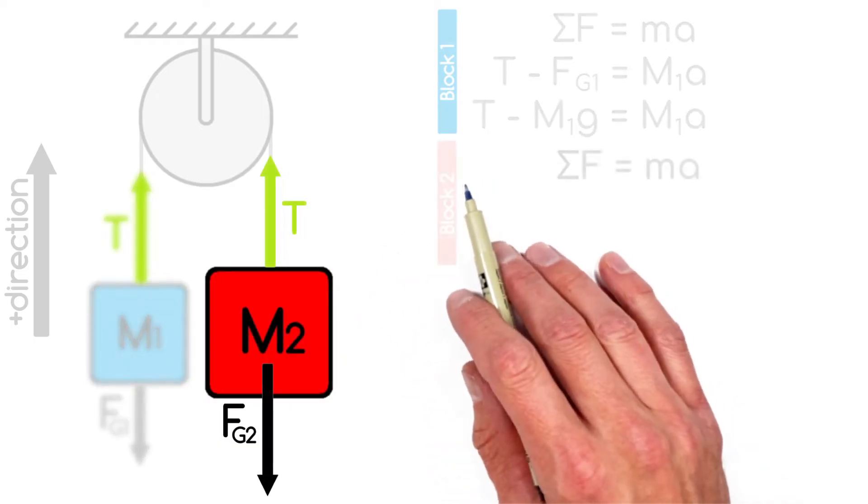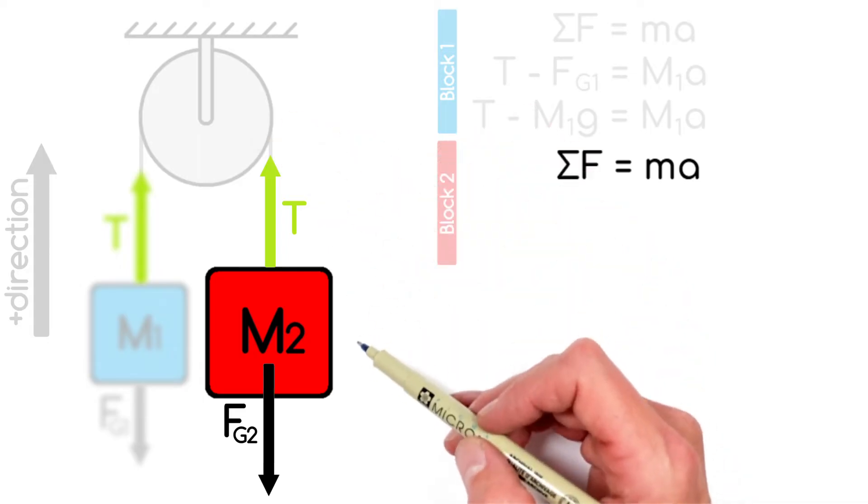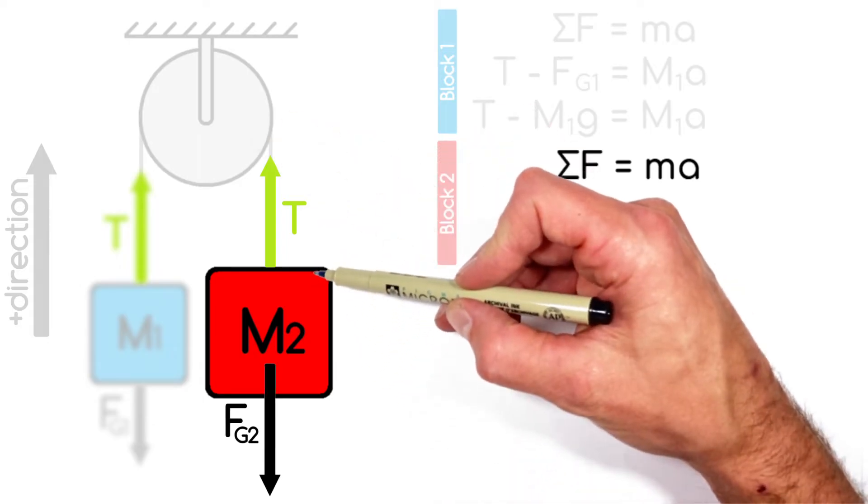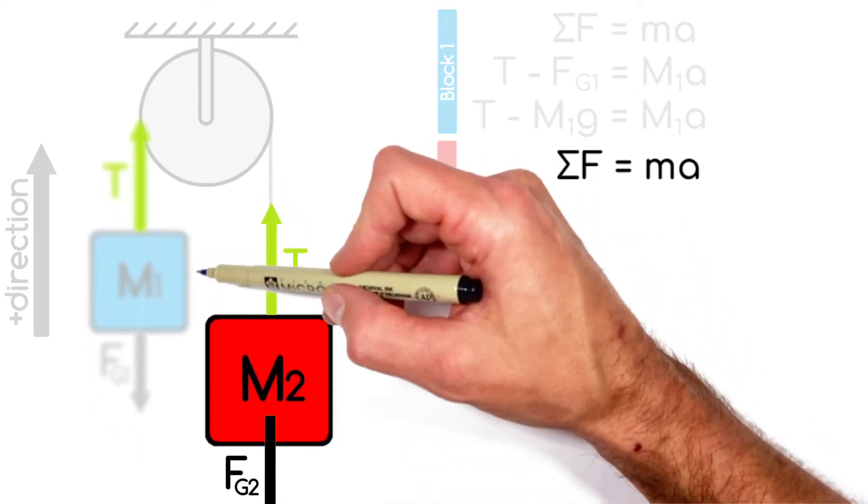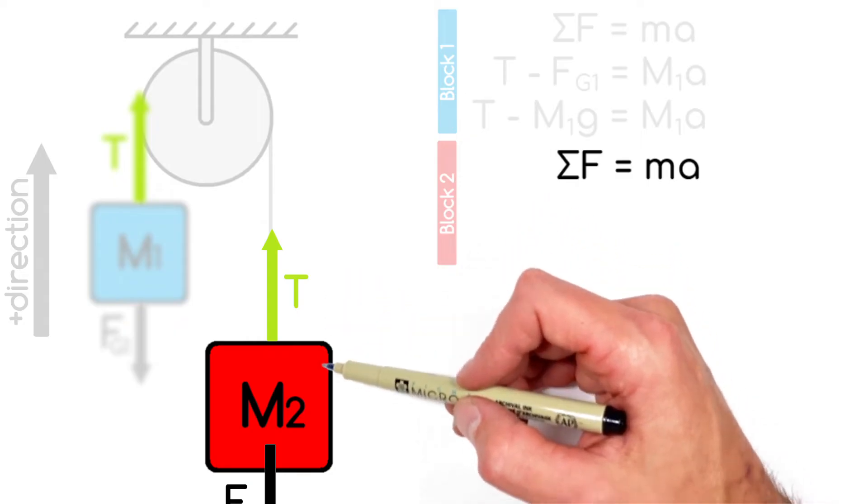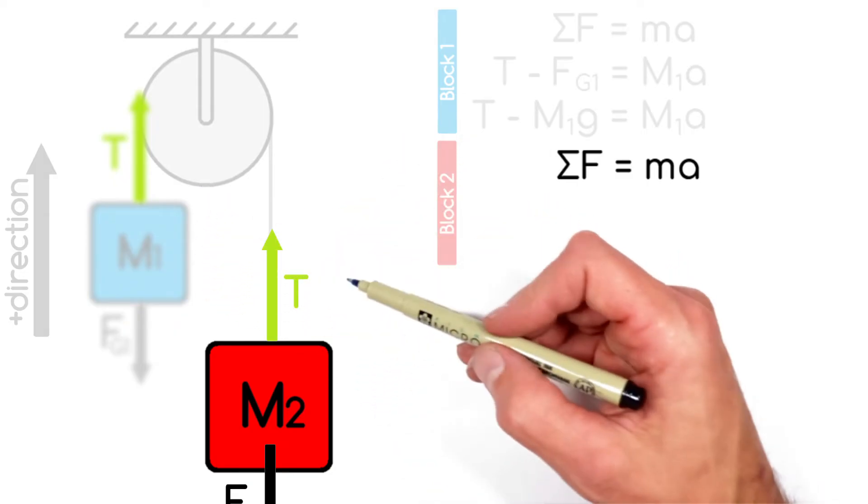And again we're going to apply Newton's second law. But this is where the trick in the entire Atwood machine problem comes up. You see, if this massive block is pulled downward by gravity, this other block's going to move up. And so really the motion of these two blocks is coupled together. As one block goes down, the other goes up.